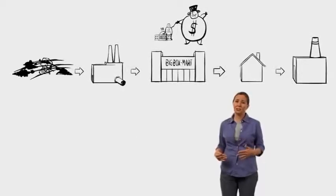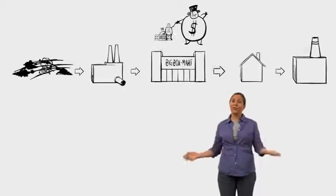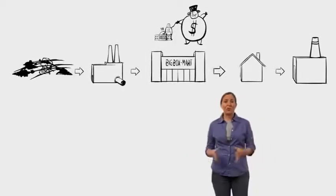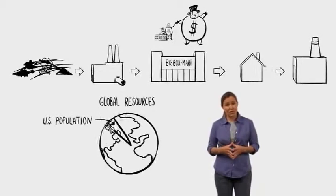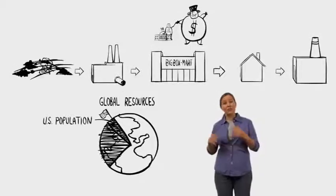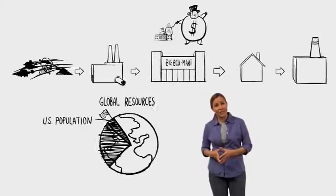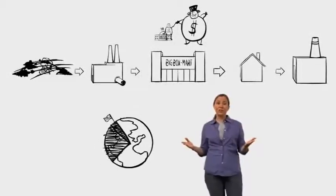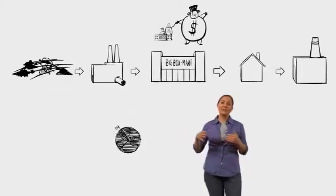And our problem is not just that we're using too much stuff, but we're using more than our share. We have 5% of the world's population, but we're using 30% of the world's resources and creating 30% of the world's waste. If everybody consumed at U.S. rates, we would need 3 to 5 planets.